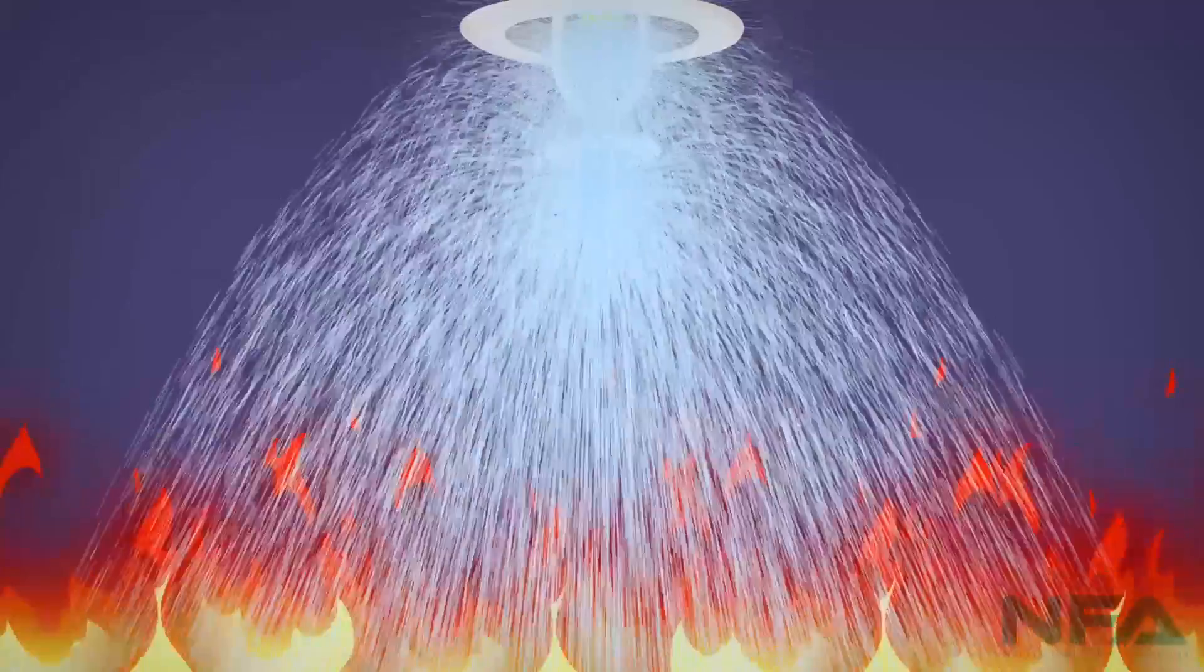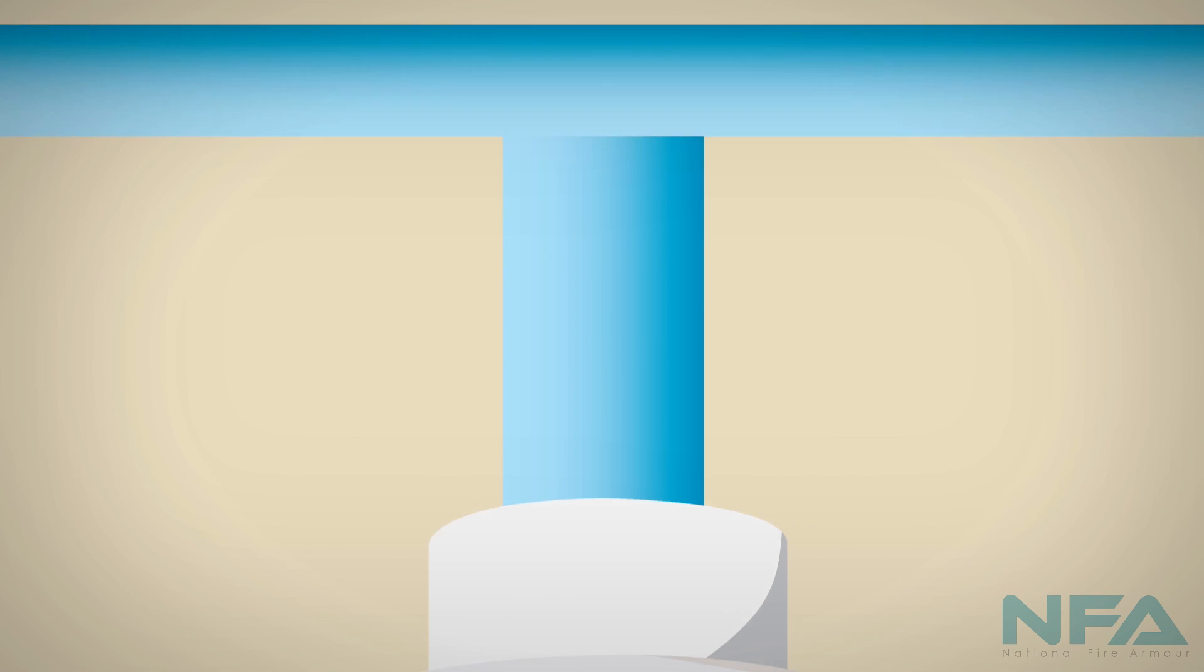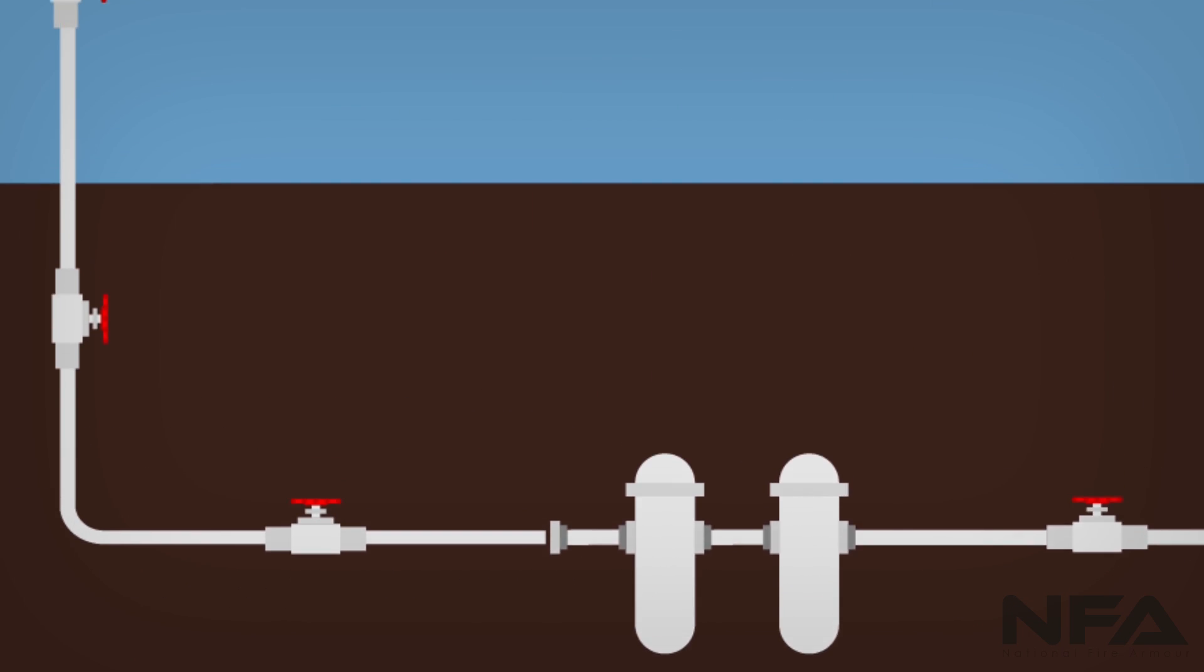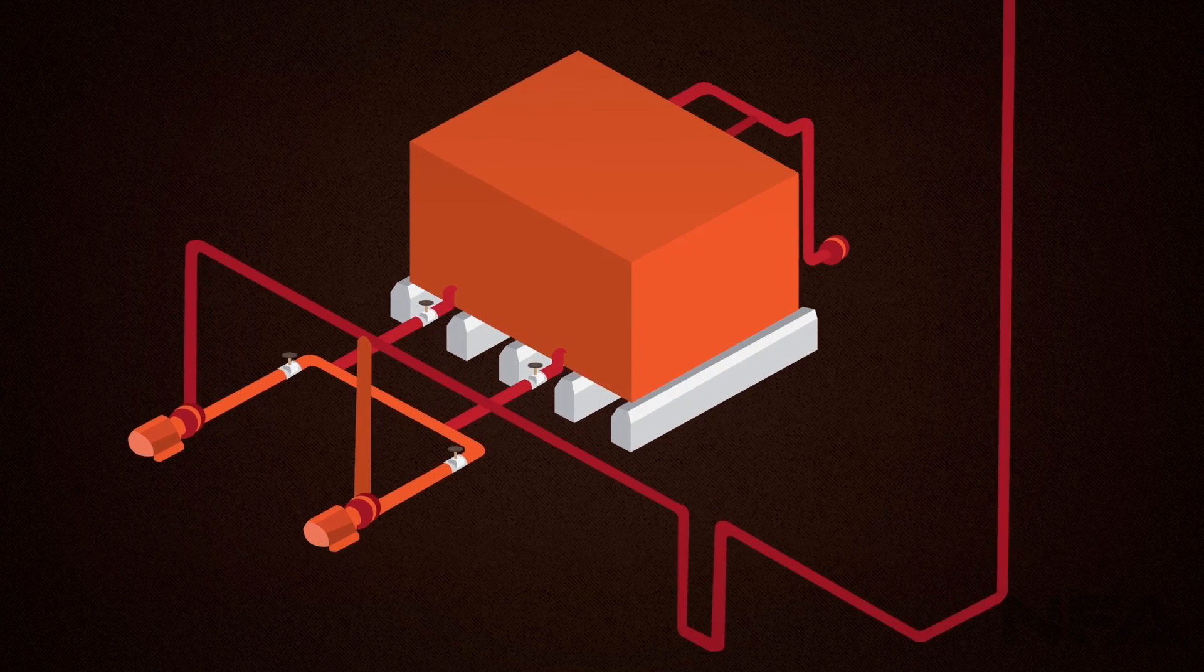The sprinkler head is attached to a system of pipes that are hidden behind the walls or ceiling. These pipes wind through the building and outside to connect with a reliable water source.